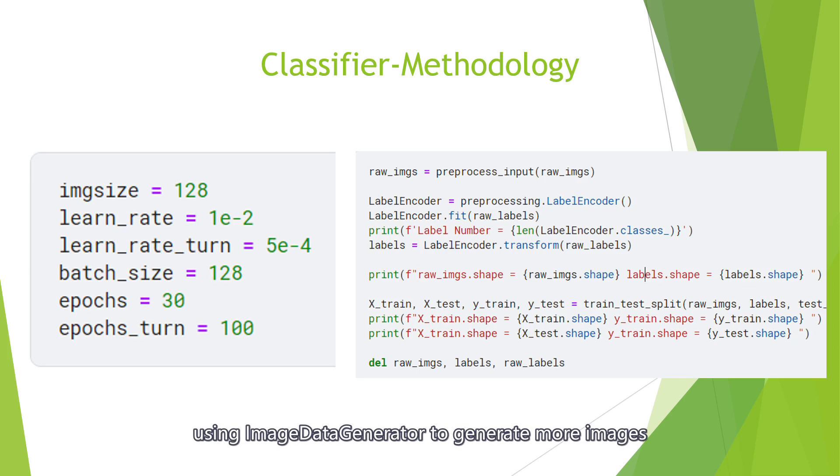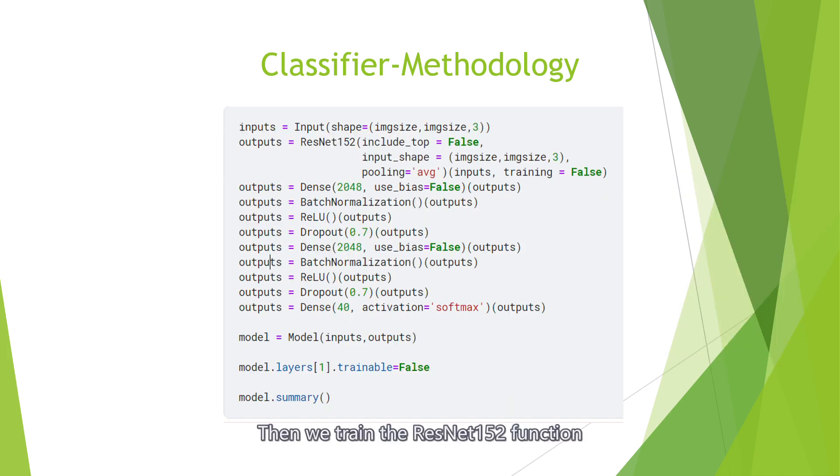We use image data generator to generate more images and set input shape to image size. Then we train the ResNet-152 function.